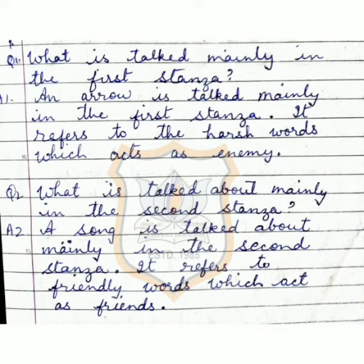Question 2: what is talked about mainly in the second stanza? In the second stanza, the poet is talking about a song — that he sang a song in the air. And that song refers to the friendly words which act as a friend.